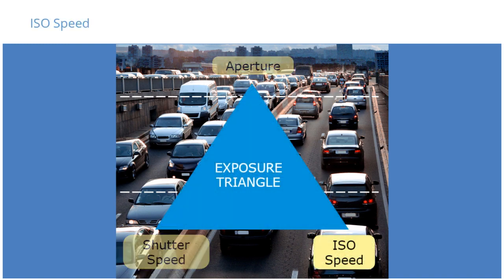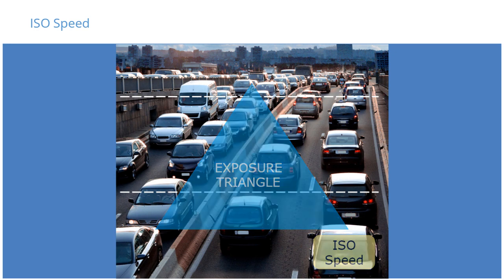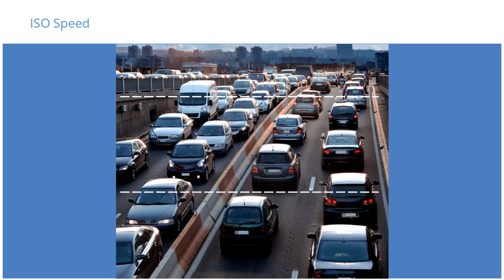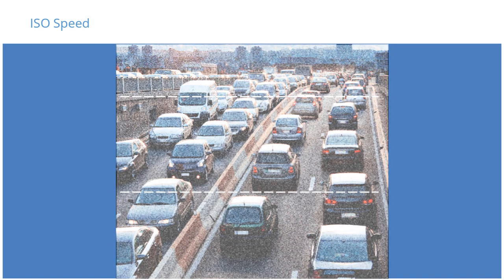ISO speed is the sensitivity of the camera's sensor to a given amount of light. Increasing the ISO speed increases gain or brightness. However, in order to do so, it introduces image noise.